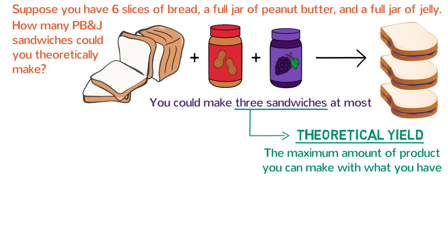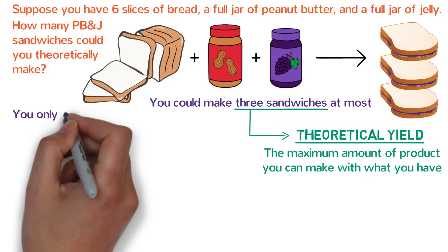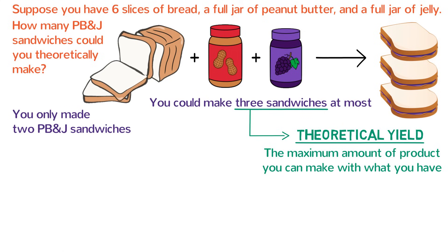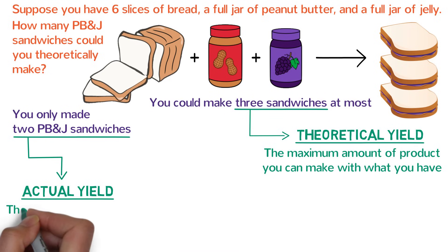Suppose however that you weren't that hungry. Instead of making three peanut butter and jelly sandwiches, you only made two peanut butter and jelly sandwiches. That is what we call the actual yield in chemistry. It is the amount of product that is actually made and collected.